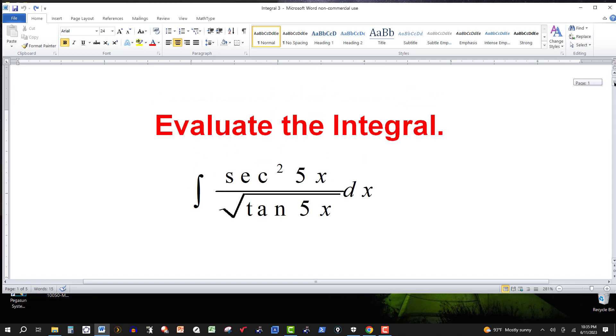Now compared to the last one that we did, this one should be pretty straightforward. In the radical in the denominator we have tangent. We know the derivative of tangent is secant squared. So that gives us a hint as to what u-substitution we will use.